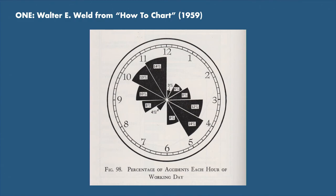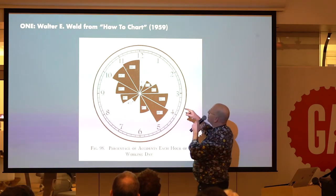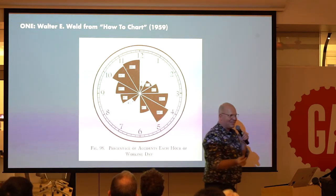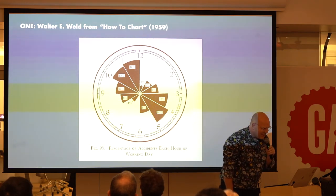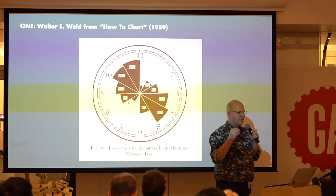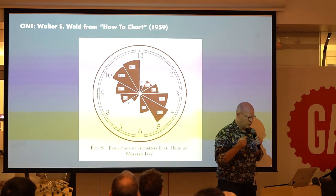This is from Walter E. Weld, from a great book called How to Chart from 1939. I love this chart — it's so easy to see, so easy to read, you totally get it in an instant. This is from a report on workplace accidents and shows the results of fatigue for an industrial plant. It's basically a Nightingale rose placed on top of a clock. You can see how the scale of accidents grows as it gets towards lunchtime and towards the end of the afternoon. The design just matches how we think about time — we have a concept of what a clock is, especially in 1959.